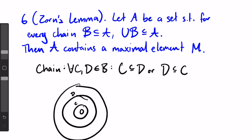So what does it mean? Well, we have our chain b with all its elements nested inside one another. Zorn's Lemma starts by saying, for every chain b which is a subset of a. So this chain is a subset of some outer ring a.